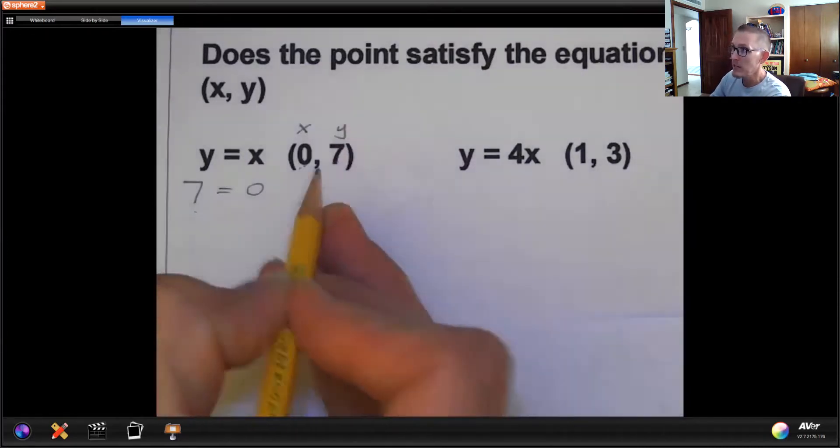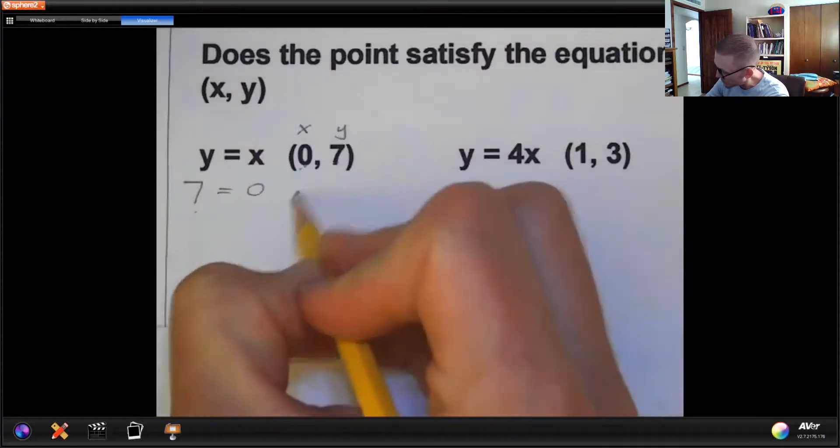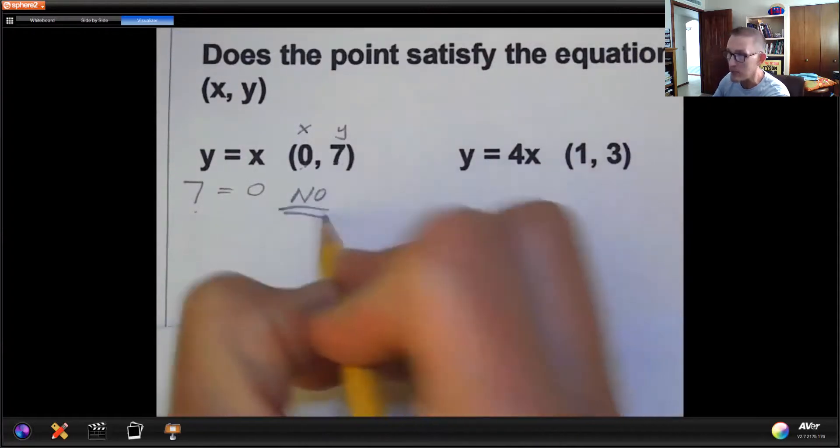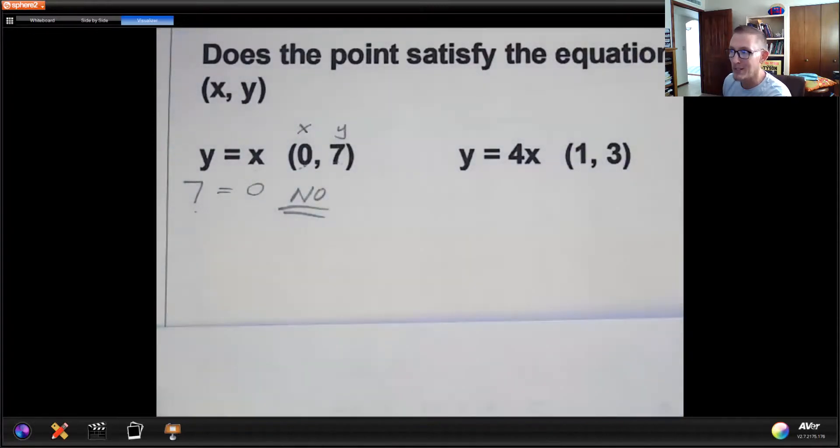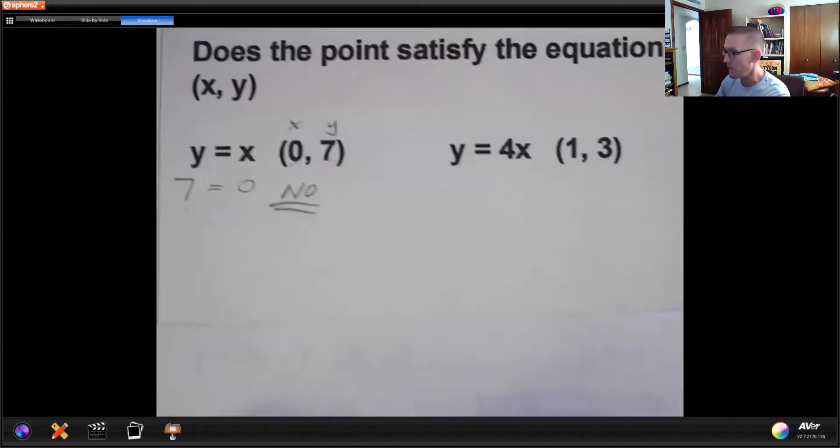So zero comma seven. Does it satisfy the equation? You would simply say, no, it does not. Because when I plugged it in, it made a statement that was false.